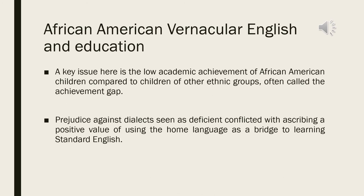Related to the role of home dialect in education, African American Vernacular English is also used in particular schools in America because of an issue concerning the low academic achievement of African American children compared to children of other ethnic groups, producing a term called the achievement gap. Prejudice against dialects seen as deficient conflicted with ascribing a positive value to using the home language as a bridge to learning standard English. African American Vernacular English is the home language used by African American children and teachers as a bridge for children to learn standard English more easily.